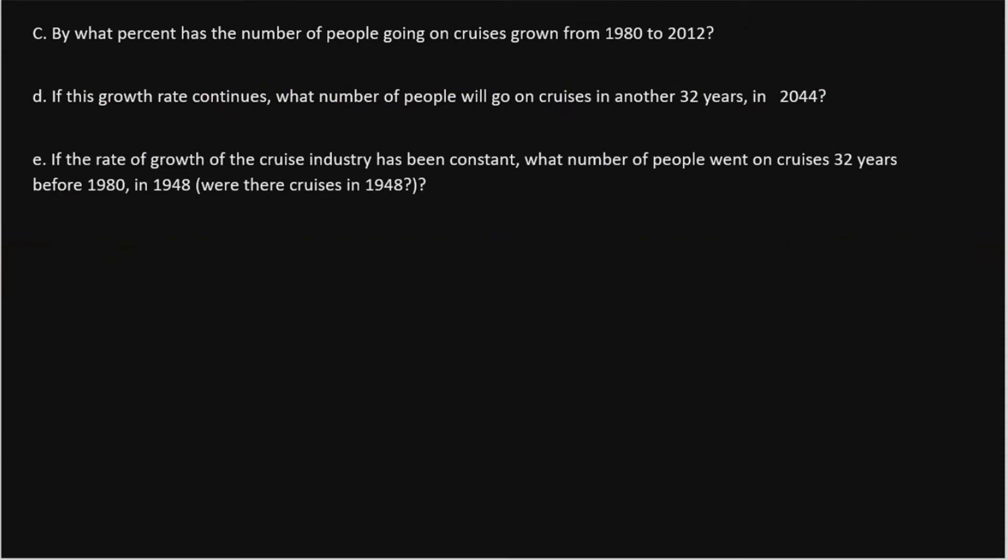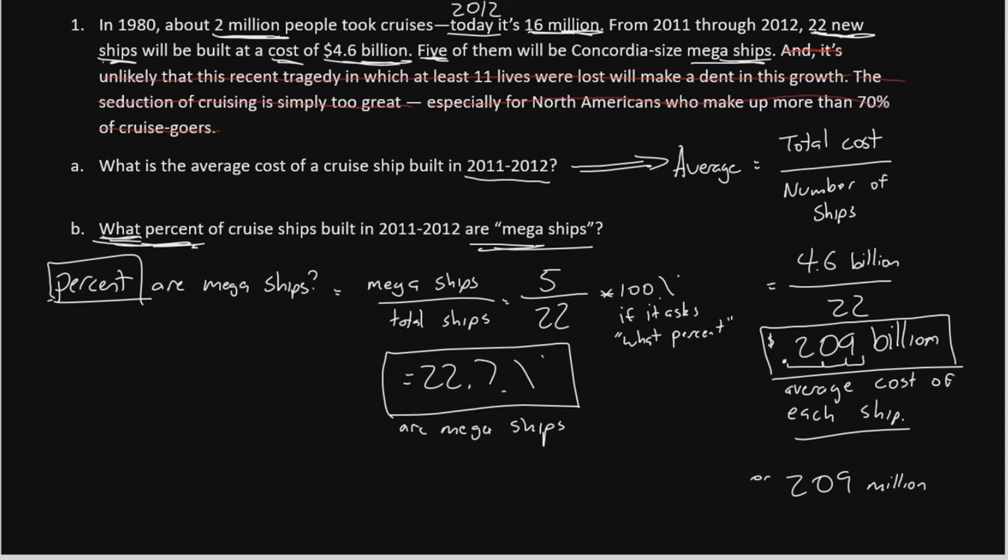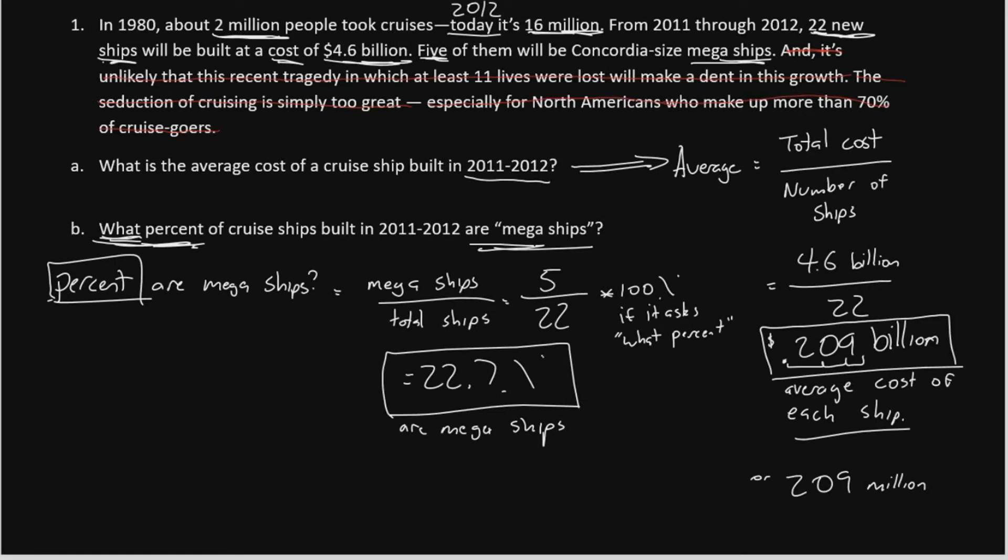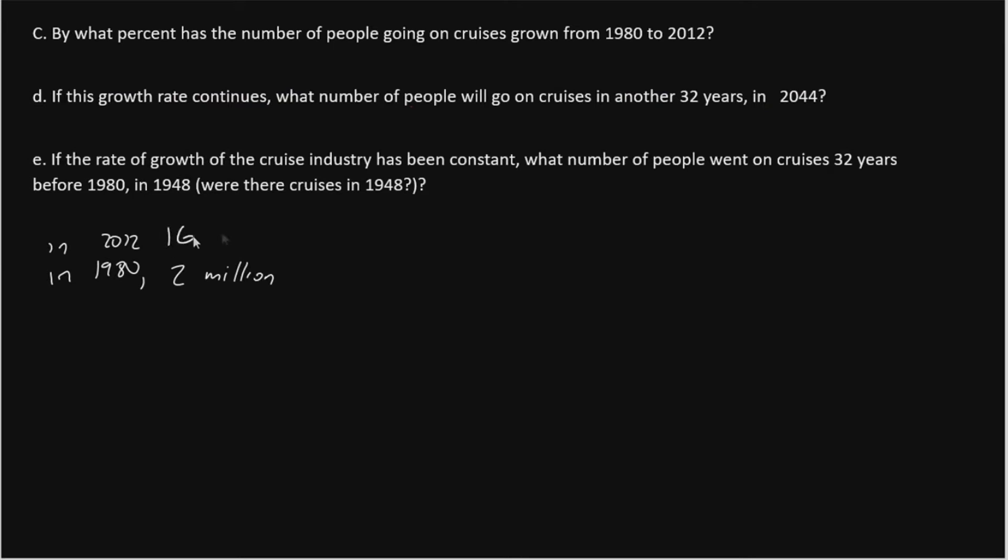Part C: By what percent has the number of people going on cruises grown from 1980 to 2012? So let's have a look at the data. In the previous slide, in 1980 we had 2 million people, and in 2012 we had 16 million. So what we need to do is subtract those two numbers to find the growth. We say 16 minus 2, it is 14.